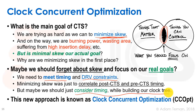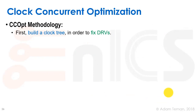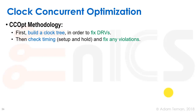This is an approach Cadence takes with what they call clock concurrent optimization — CCOpt. It's a completely different approach from the zero-skew CTS we've been discussing. The methodology: first, build a clock tree and fix DRVs — buffer the clock net to meet max fanout, max capacitance, and max transition constraints. After that, check timing — check setup and hold — and fix any violations.